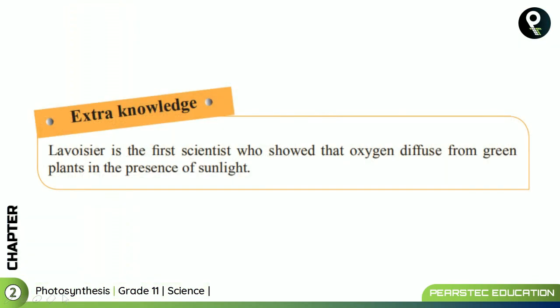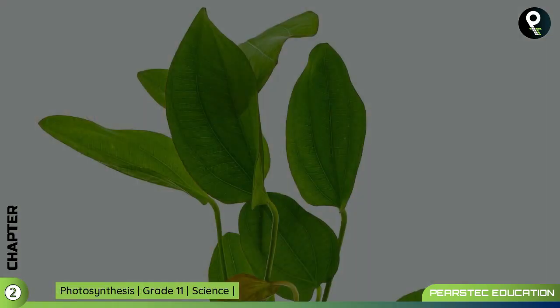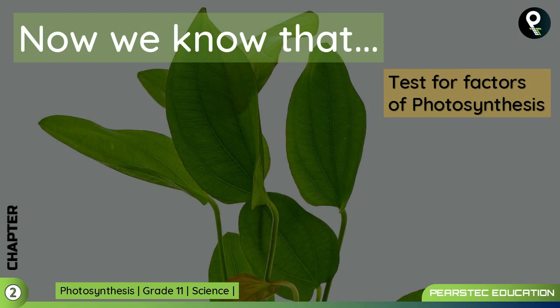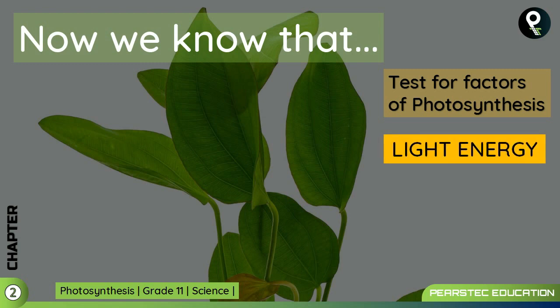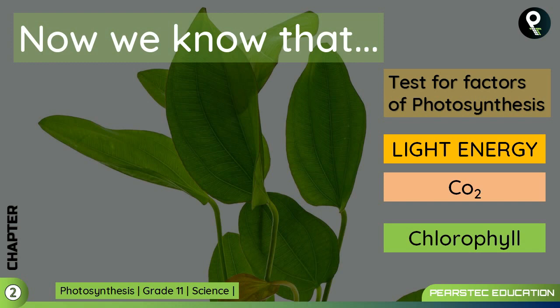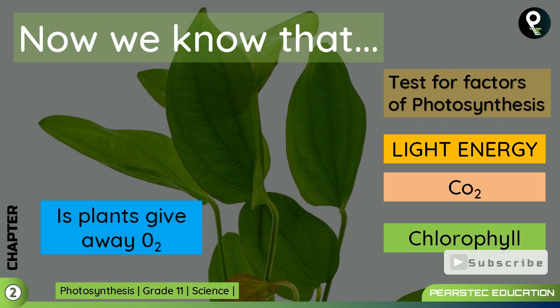Lavoisier was the first scientist who showed that oxygen diffused from green plants in the presence of sunlight. To summarize, we now know the tests for all factors of photosynthesis: light energy is required — tested using black and transparent strips; carbon dioxide is required — tested using two plastic bags, one with water and one with potassium hydroxide; chlorophyll is required — tested with white paper patches and starch test using iodine. We also found that plants give away oxygen, confirmed through the hydrilla aquatic plant experiment.